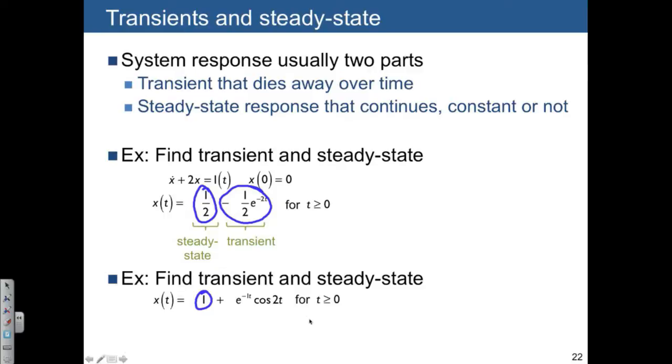And then we have an exponential multiplied by a cosine. The cosine is never going to go away, but the good news is it's multiplied by an exponential which is going to die away. And so we know that this is going to be the transient part. So again, we label the steady state and the transient.